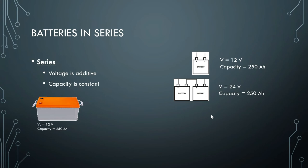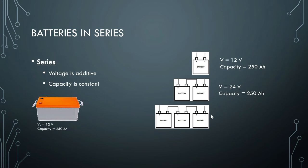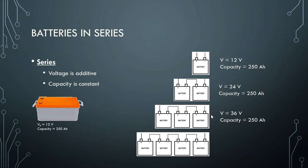If we connect another battery in series — so that's three 12-volt batteries — we get a voltage output of 36 volts, with the capacity still at 250 ampere hours. And if we connect another one in series, that's four 12-volt batteries connected in series, giving us a voltage output of 48 volts, with the same capacity of 250 ampere hours.